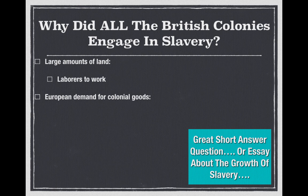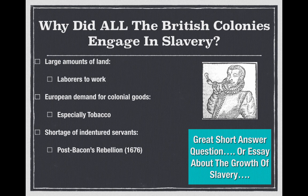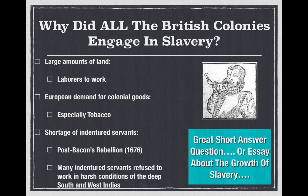You must know that the most popular good grown in the south during this time was tobacco, especially in the Chesapeake. Also, there's a shortage of indentured servants post Bacon's Rebellion in 1676 — we've talked about that quite a bit. Many indentured servants refused to work in the harsh conditions of the deep south and the West Indies, so there was a lack of indentured servants coming over from England.